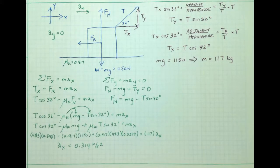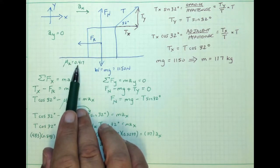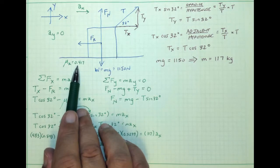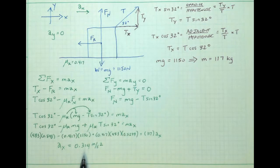Carefully working through the computation, we arrive at the acceleration in the x direction: 0.314 meters per second squared. This is a very small acceleration. We exerted the minimum force to get the crate moving — just enough to overcome static friction. The coefficient of kinetic friction is slightly less than the static friction coefficient, so there is slightly less kinetic friction, resulting in a very small acceleration.